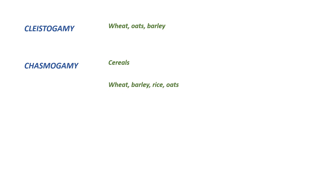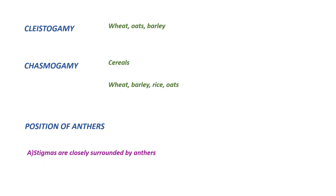Clistogamy is seen in crops like wheat, oats and barley. Chasmo gummy: in chasmo gummy, the flowers do open but the opening of the flowers occurs after pollination has taken place. It is seen in most of the plants like wheat, barley, rice and oats. The position of the anthers also ensures self pollination to occur. In some plants the stigmas are closely surrounded by anthers, which is seen in crops like tomato and brinjal.